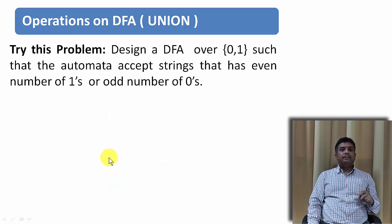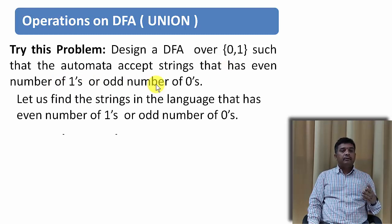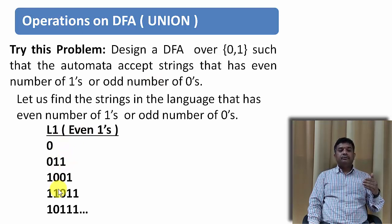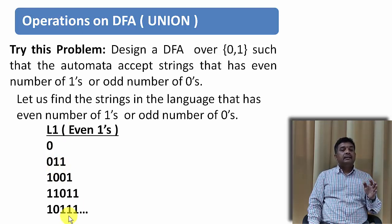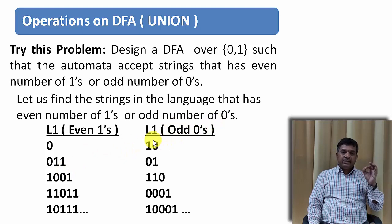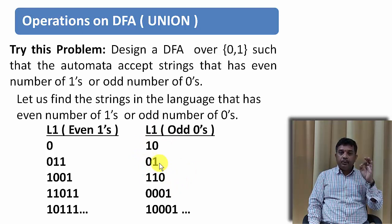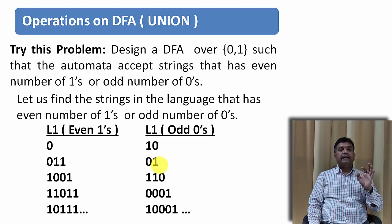If you understood, try this problem: design a DFA that accepts strings that have even number of 1s or odd number of 0s. Even number of 1s means 0, 2, 4 ones, and they need not come together. Odd number of 0s means at least one 0, like 0, 010, and so on. Take the DFA of both problems, merge their starting states, and whatever you get is the final answer. If you have any problem, do comment and I'll help.